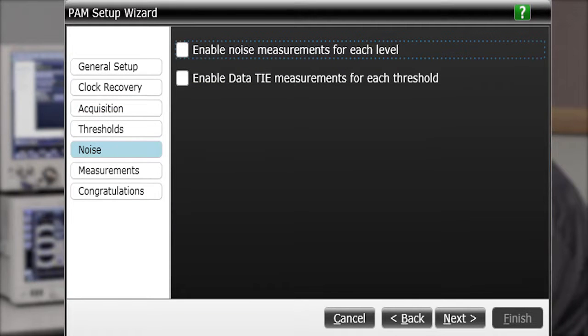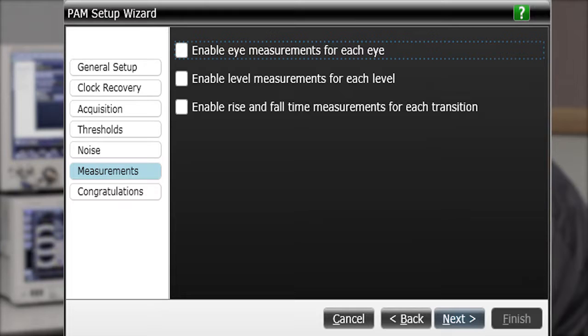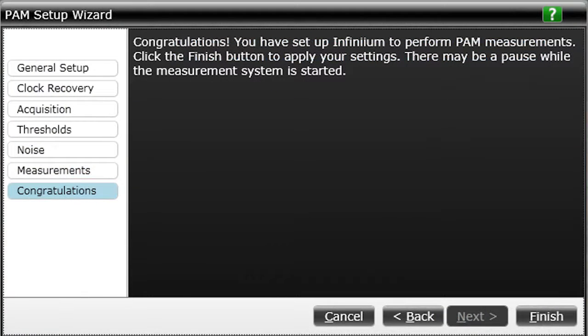So we're going to go ahead now and enable a few measurements. We can do noise measurements. In this case, I'm going to do a couple of quick eye measurements. So we'll be looking at eye width, eye height. We'll also be looking at rise and fall time for each of the eyes that are generated. We'll go ahead and click on finish.